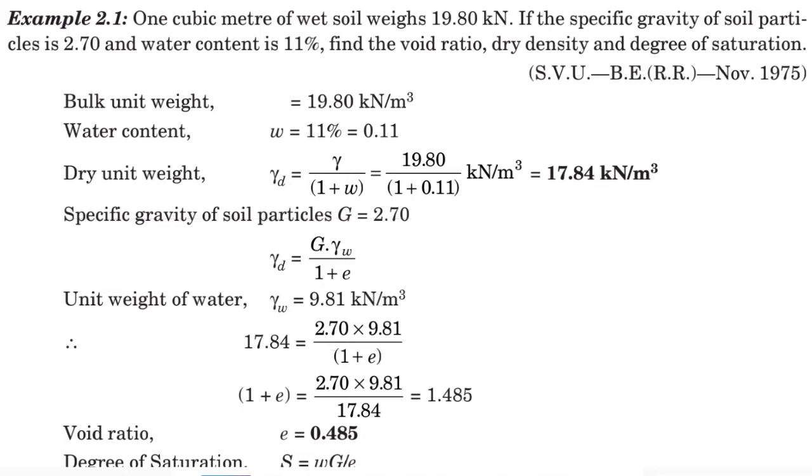Next, the specific gravity is also given as 2.70. From that we can find the e value. We know the formula gamma d equals G times gamma w divided by 1 plus e. We know gamma d, G, and gamma w, so the only unknown is e.